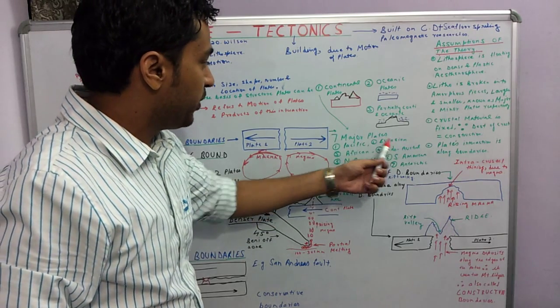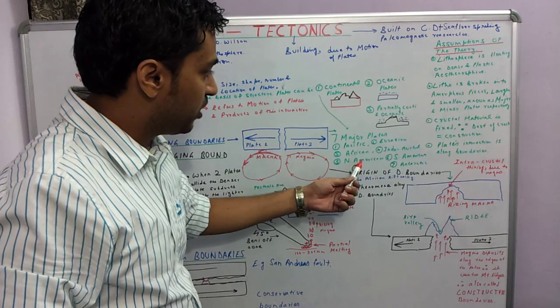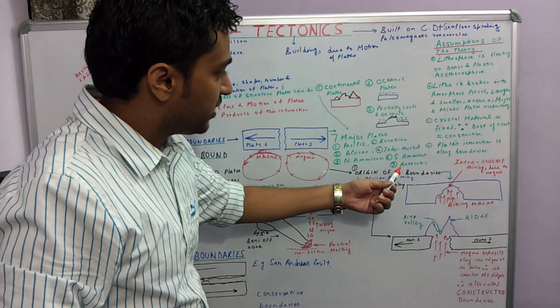On this basis we can have seven major plates: Pacific plate, Eurasian plate, African plate, Indo-Australian plate, North American plate, South American plate, and the Antarctic plate.